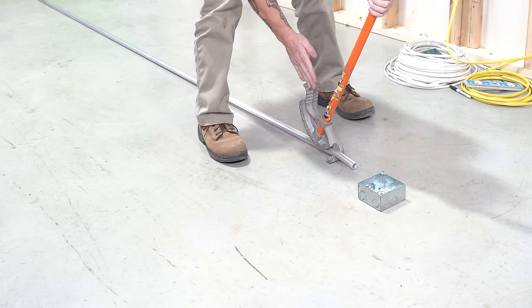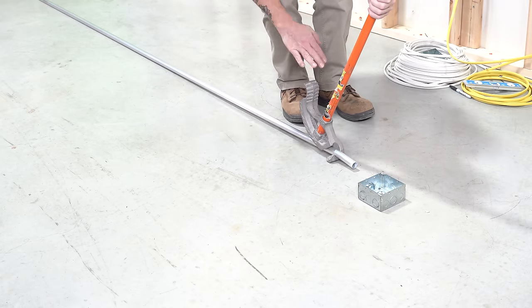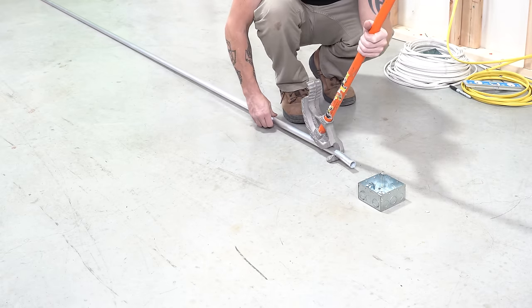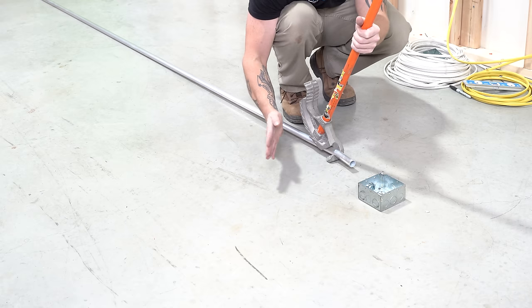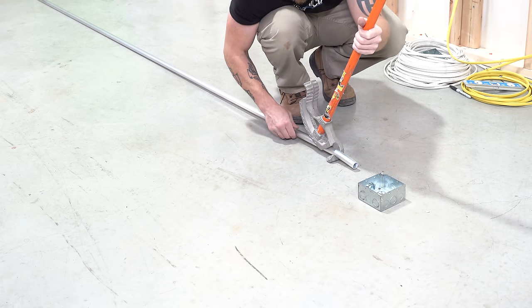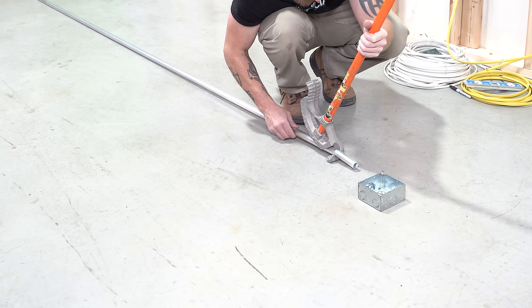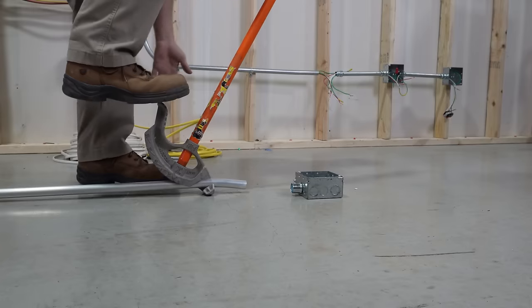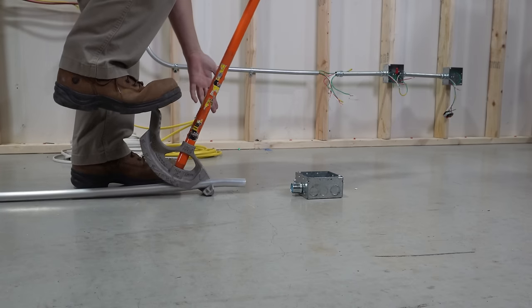And then again, you want to make sure that your conduit is straight. You don't want this thing to be turned so that your pipe's going off to the side. It's going to dogleg the crap out of it. So you want to make sure that everything is nice and straight. Same thing. We're going to bend down, barely kick it.